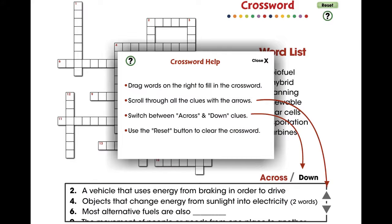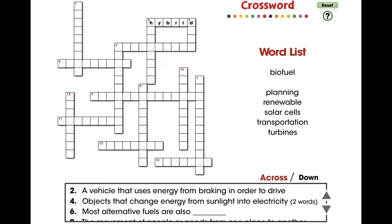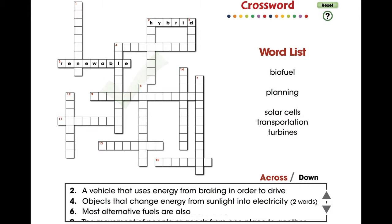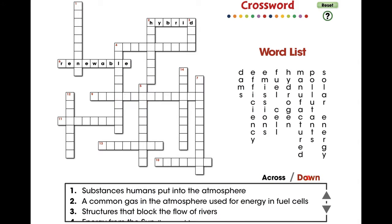In this crossword mini, 15 vocabulary words are provided with across and down clues. For middle school, this mini is great for vocabulary and comprehending all the words centered around the topic of global warming reduction.